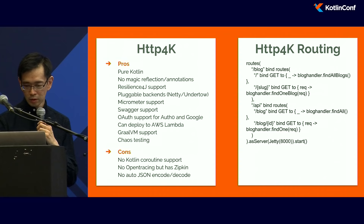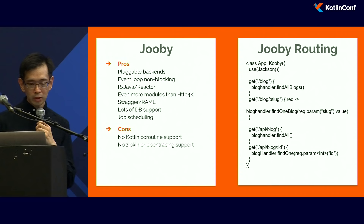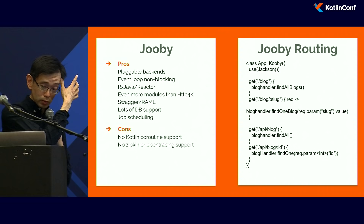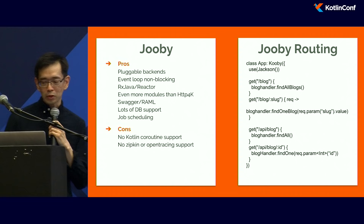Another framework is Javalin. It has pluggable backends, runs in an event loop which is non-blocking, has RxJava support and Reactor support, more modules than HTTP4K, lots of database support, and built-in job scheduling. Unfortunately, it doesn't have Kotlin coroutine support and only has support for Logback instead of open tracing or Zipkin.